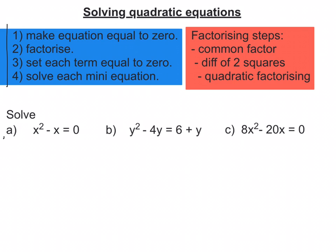So for the first one here, step one, make equation equal to zero. Well, it's already equal to zero, so we're fine there. To factorize, using my factorizing steps up here, first I look for a common factor, then a difference of two squares, and then quadratic factorizing. Well, in the first one, there is a common factor, and that's x, so I'm going to take the x out, and I'm left with x(x - 1) = 0.